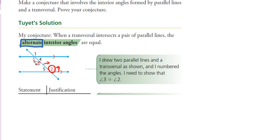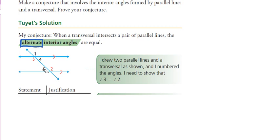There's another set of alternate interior angles in this diagram. Which ones are they? — 5 and 4. Very good. Angles 5 and 4 are on opposite sides of this transversal and they're both inside the parallel lines. That make sense? Okay, alternate interior.